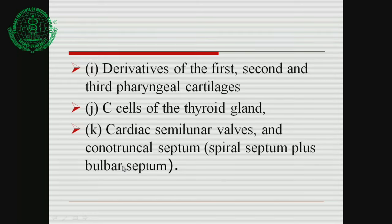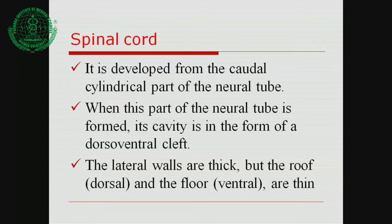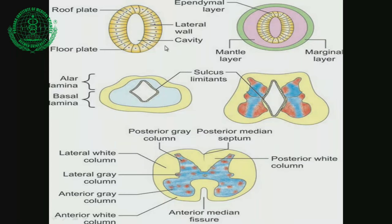Now we will discuss the development of the spinal cord, the first actual organ to consider. The spinal cord develops from the caudal cylindrical part of the neural tube, just below the rhombencephalon. When this part is formed, its cavity is in the form of a dorsal-ventral cleft, with a roof plate, floor plate, and lateral walls — the floor of which leads to the central canal.